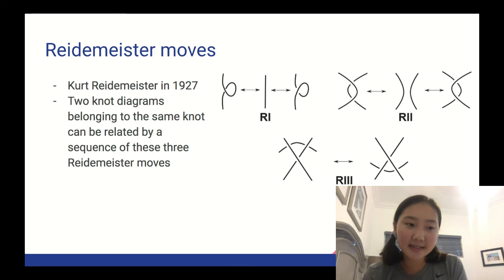So in 1927, Kurt Reidemeister discovered three moves that could be used to show knot equivalence. Basically, a sequence of any of these three moves can transform a knot to the diagram of its equivalent knot. So the three moves on the right of the slide, as you can see, the first one, R1, is known as like a loop. The second one is known as like a twist. And the last one is known as like a sliding movement.